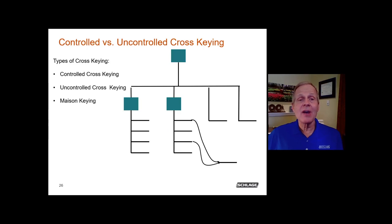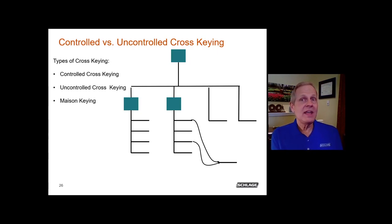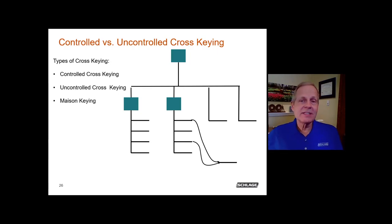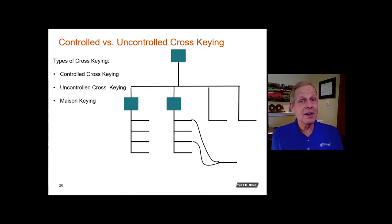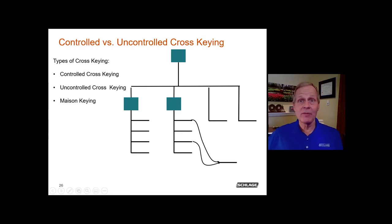Let's look at some examples to identify the type of cross-keying. If three change keys all coming under one master key are operating a cylinder, that is controlled cross-keying — all three change keys come from under the same master.